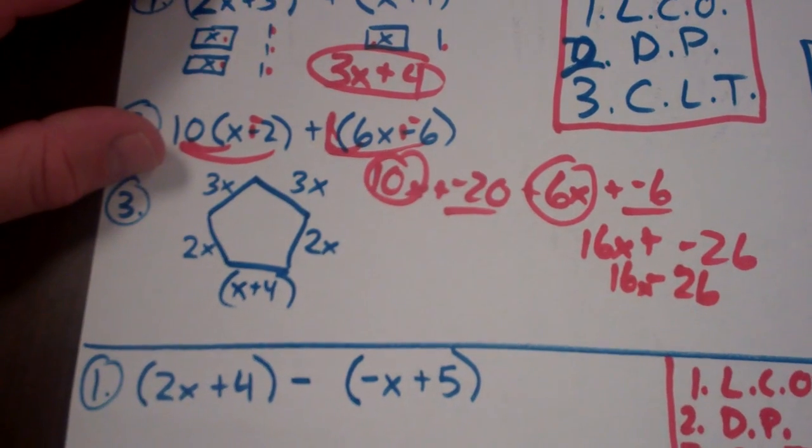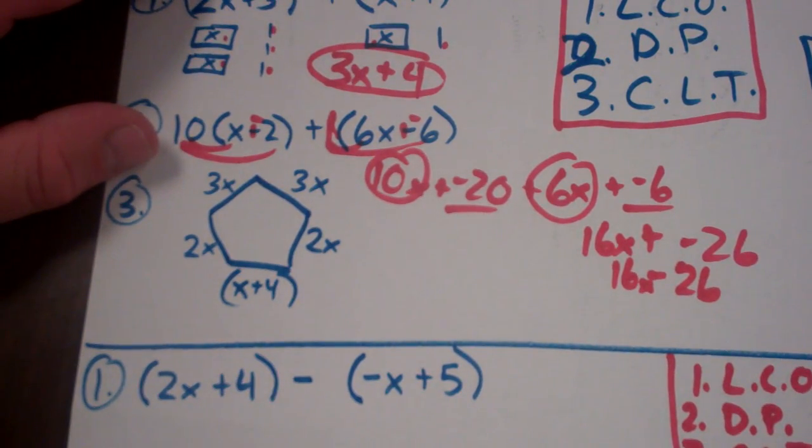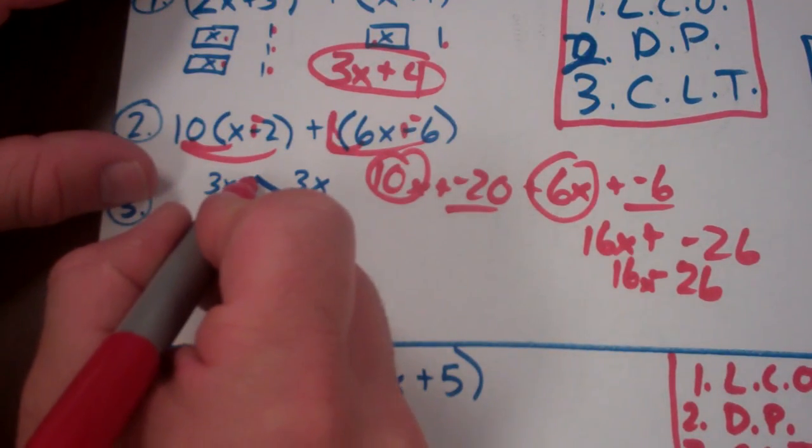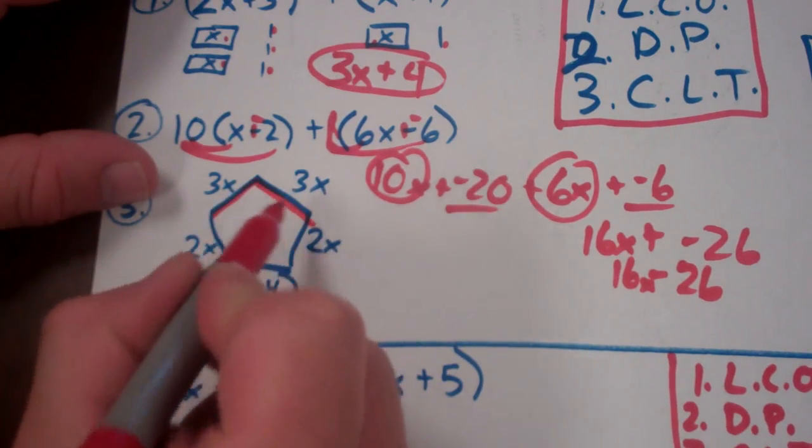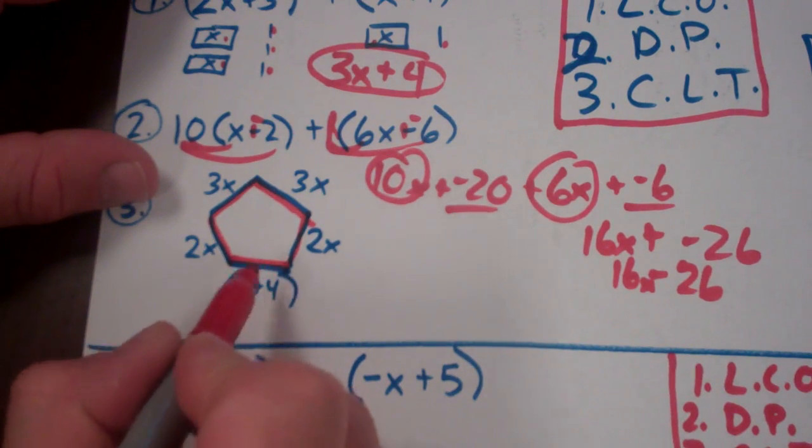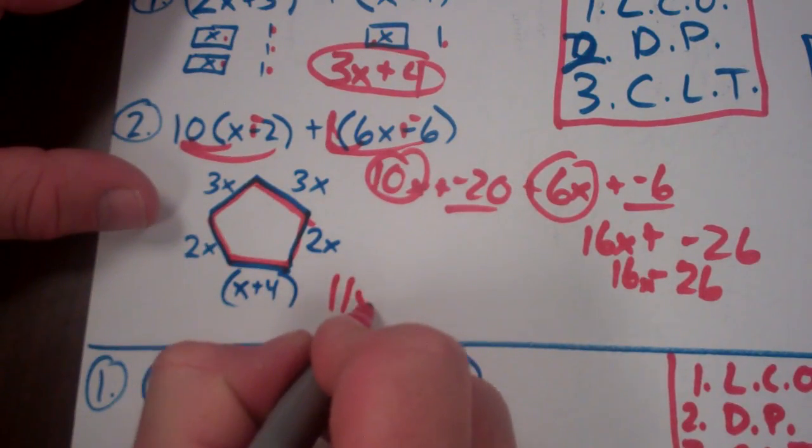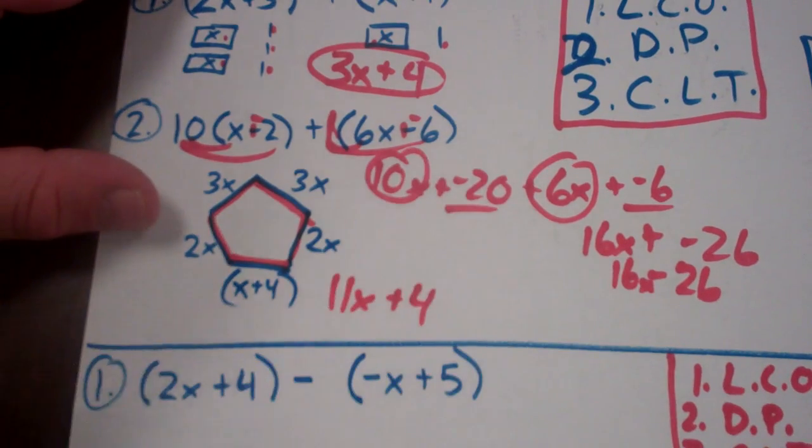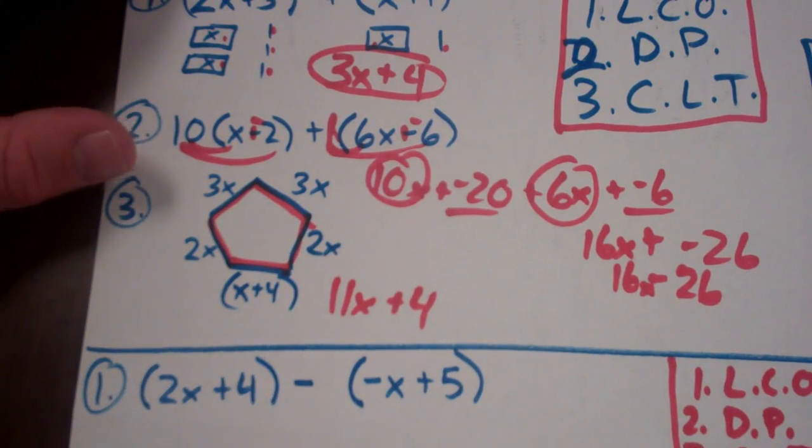Number 3, combine like terms. They want the perimeter of this pentagon. So you can simply add them because they're like terms. 3x and 3x is 6x. There'd be 8x. There'd be 10x. I have one more x, which would be 11x's. And I have a 4 that doesn't match, so I have to leave it separate. 11x plus 4.